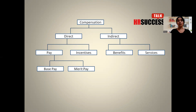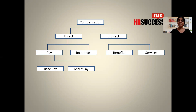This is a broad overview diagram which indicates what compensation is all about. Compensation is broken into two types: one is direct and the second is indirect. Direct payment is a cash payment, whereas indirect is a non-cash payment. Direct compensation is further divided into pay and incentives; pay is further divided into base pay and merit pay. The indirect or non-cash compensation is divided further into benefits and services.